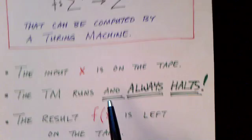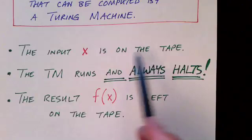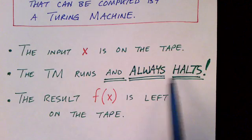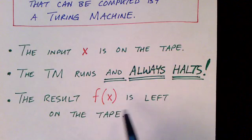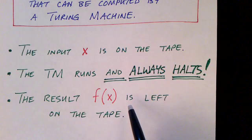So the input x to the computable function is on the tape. The Turing machine runs and always halts and it leaves a result on the tape. We don't really care too much about acceptance or rejecting.